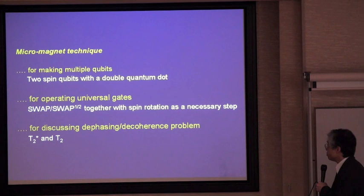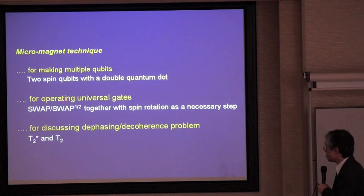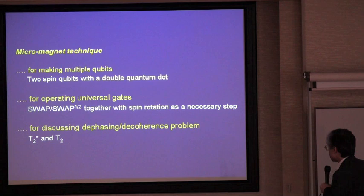We extend this technique to make multiple qubits. In this case, we demonstrated two spin qubits with a double quantum dot, and further extended the technique to operate universal quantum gates. We have already succeeded in operating the SWAP and the square-root-SWAP gates, together with spin rotation as a necessary step for making universal gates.